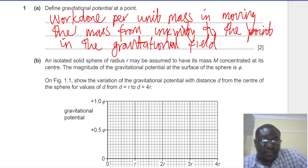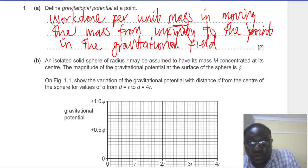Part 1a says define gravitational potential at a point. Now the gravitational potential at a point is defined as the work done per unit mass in moving the mass from infinity to the point in the gravitational field. So unit mass is very important there.